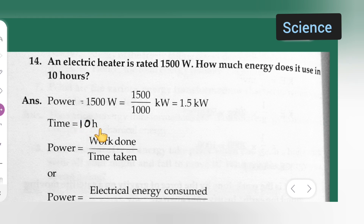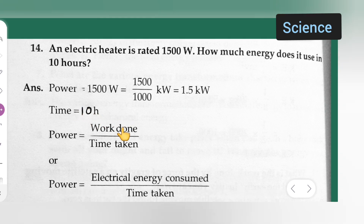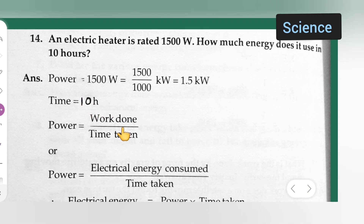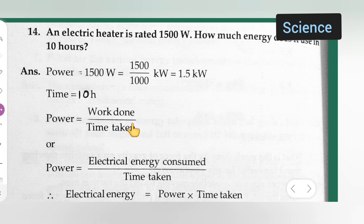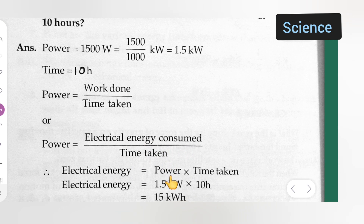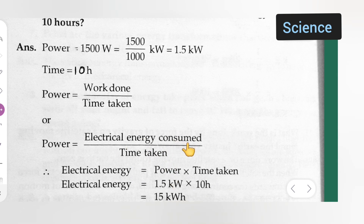Time is given as 10 hours. Power has two formulas: one is work done upon time taken, or power equals electrical energy consumed upon time taken. We are using this second formula.